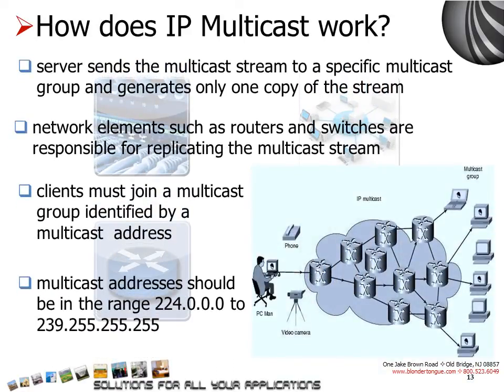How does IP multicast work? The server, or the sender, creates one copy of the stream and transmits it to the group multicast address, which is in the range of 224.0.0.0 to 239.255.255.255. The client, or viewer, who wants to receive the stream uses the group multicast address to view the stream. It is the responsibility of the network elements, such as routers and switches, to replicate the stream and transmit it to the viewers wherever they are present on the network.